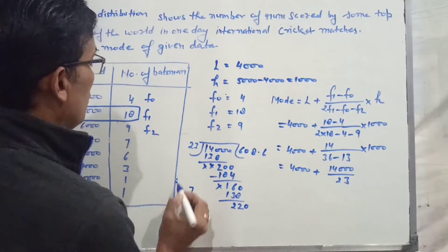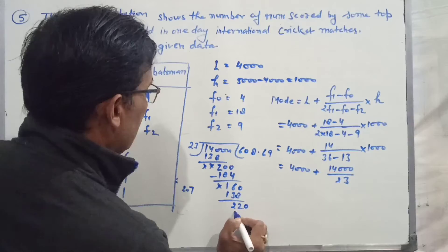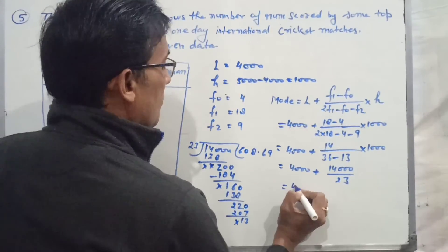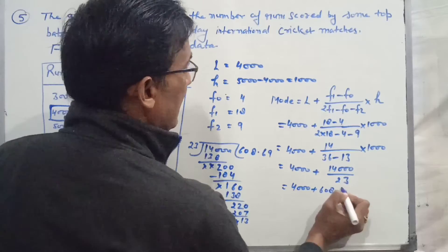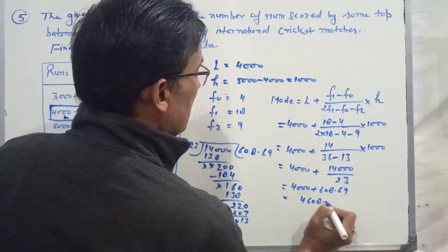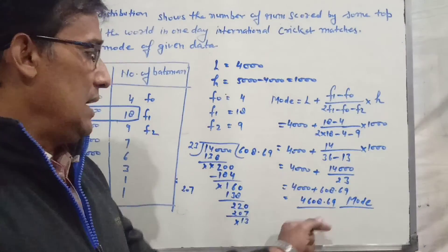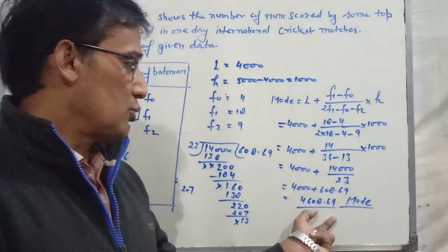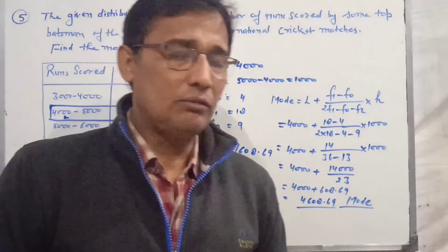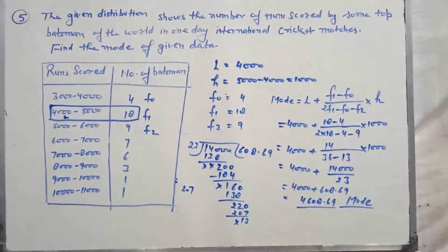9 times 3 equals 27, carry 2 gives 20. 9 times 2 equals 18, giving 20. So this quotient is 608.69. Therefore, 4,000 plus 608.69 equals 4,608.69, the mode from the given data.